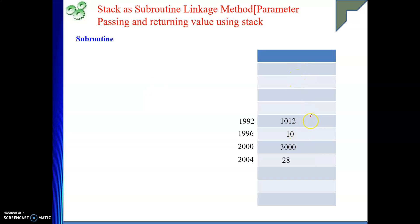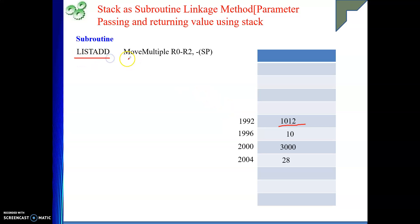Now we are in the subroutine LIST_ADD. The first instruction is MOVE MULTIPLE R0 through R2 onto the stack. That means we are pushing the values of registers R0, R1, and R2 onto the stack — three push operations performed by executing a single MOVE MULTIPLE instruction.